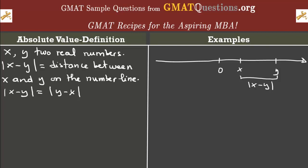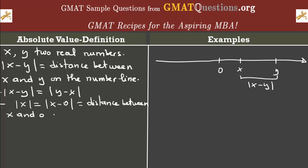Also because of this definition, we can say that the absolute value of x alone can be written as the absolute value of x minus 0, which is the distance between x and 0 on the number line. So if we choose x here on the left of 0, meaning x is negative, the distance between x and 0 is the absolute value of x. It doesn't matter where x is — it could be positive, 0 itself, or negative.